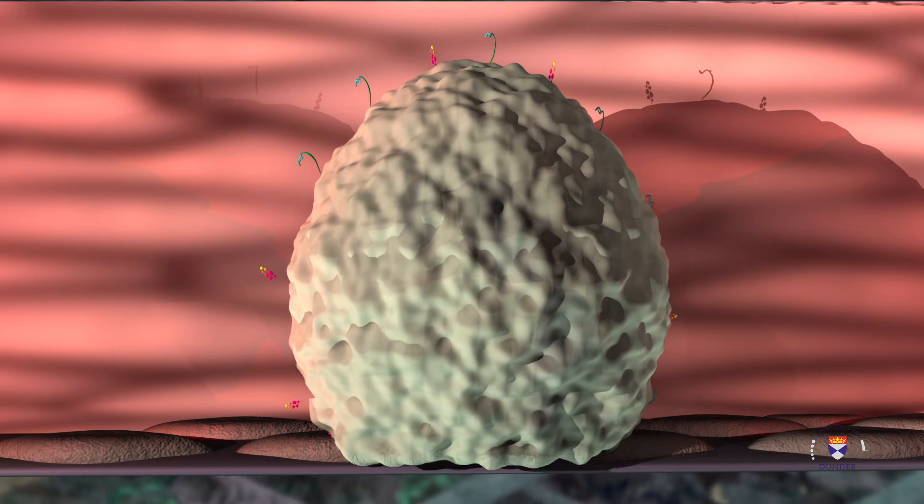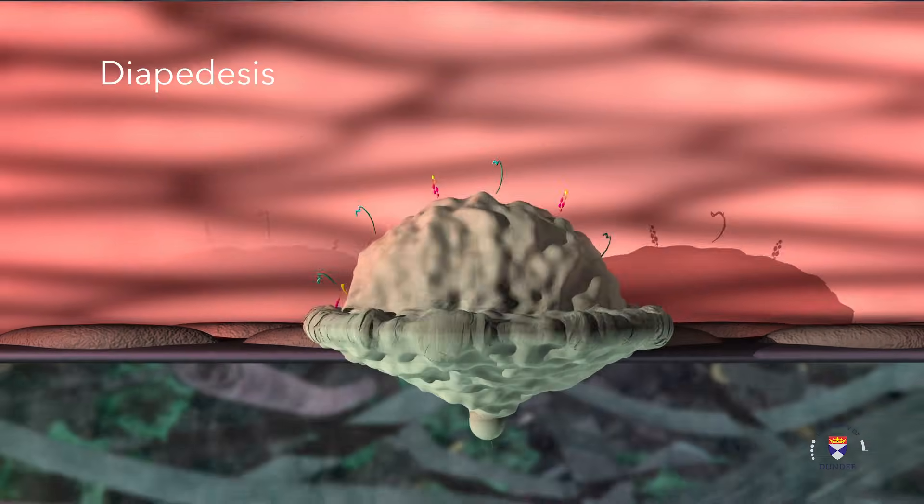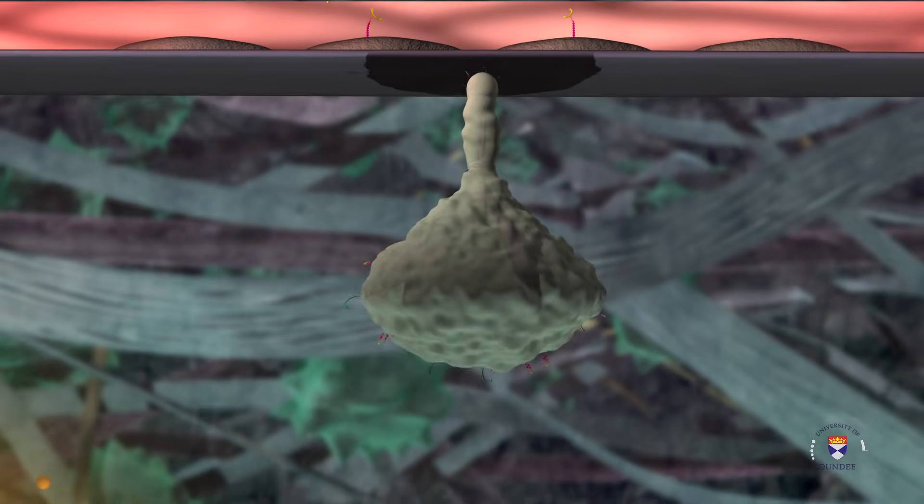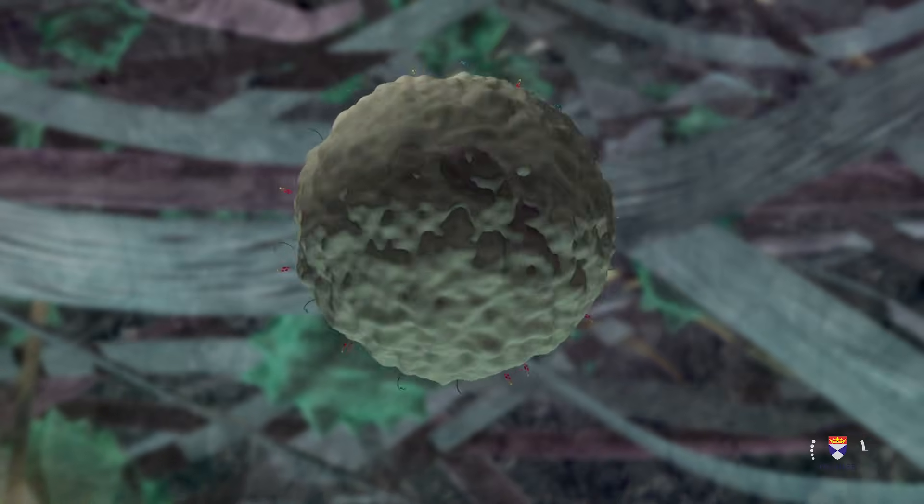The leukocyte crosses the vessel wall by extending its pseudopods through the gaps, pulling themselves through and into the extravascular space. This process is known as diapedesis.